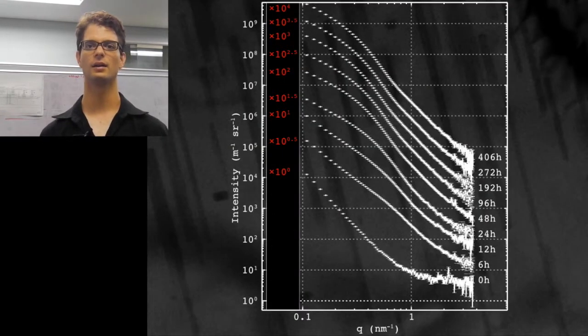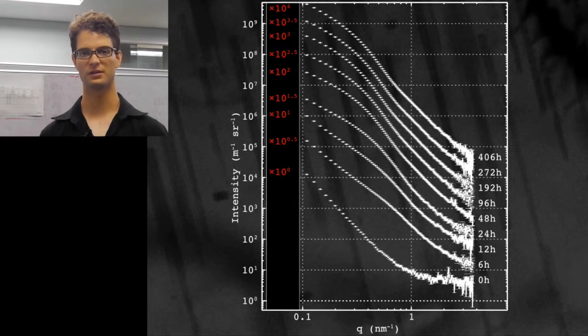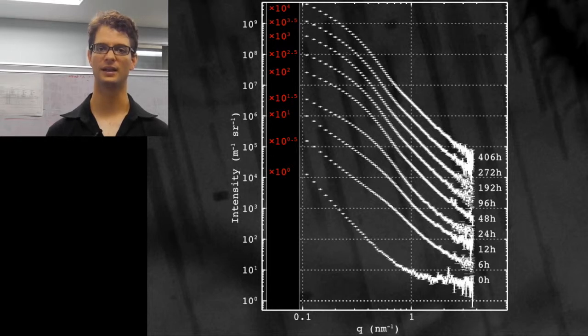We collected a lot of small angle scattering patterns for this alloy for a variety of aging times. The higher the aging time, the more of these rod-like precipitates we have inside the alloy.